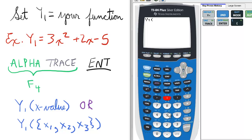Let's say we want to find F of 5. So we enter 5 in parentheses, close parentheses, enter. So F of 5 is 80.